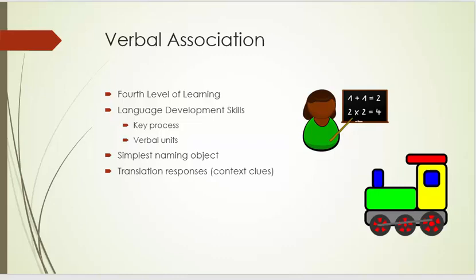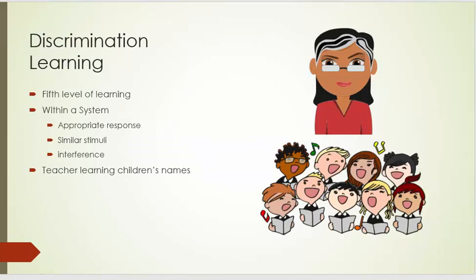The fourth level of learning is verbal associations. Language development skills, which are a key process to any learning, and verbal units, or chunking, are an integral part of this form of learning, and it ranges from the simplest naming object to translation responses or context clues. For instance, train or train, same word, two different connotations.